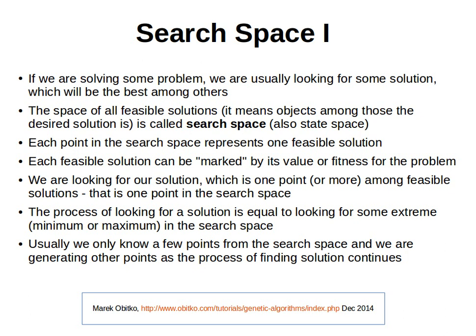For example, imagine you're trying to guess a password. The password consists only of small case characters — a, b, c, d — and its length is eight characters. You can have all the possible permutations of the English alphabet from a to z with eight characters. The space of all these possible values is called the search space. The space of all feasible or possible solutions is called the search space or state space. Each point in the search space represents one feasible solution.